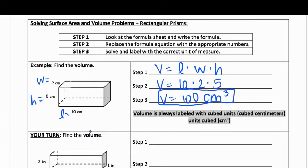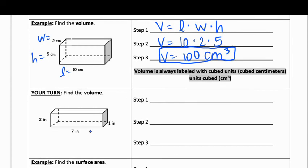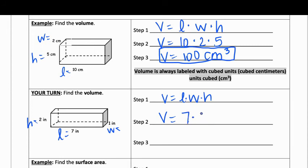You can pause and try the next one on your own or follow along. Again, find the volume of a rectangular prism, so we use V = LWH. This time the length is 7, width is 1, and height is 2. So V = 7 × 1 × 2. That gives 14. Since we're talking about volume, the units are cubed — the final answer is 14 inches cubed.